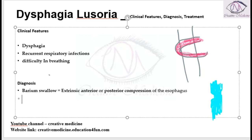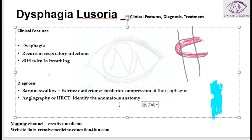This compression is seen on the barium swallow. You can also do an angiography or a high-resolution CT scan, mainly for the identification of the vascular anomaly.